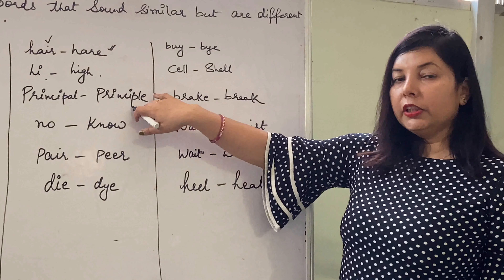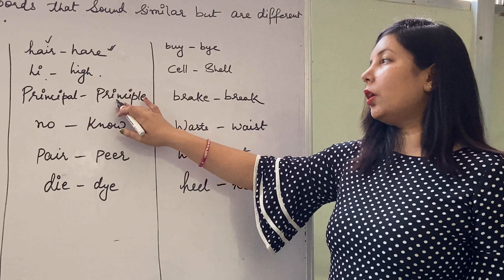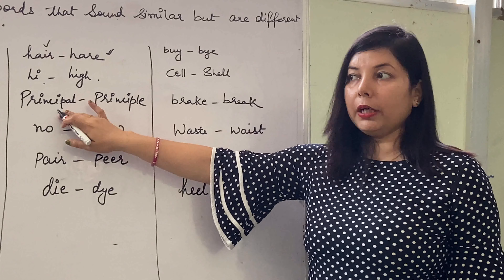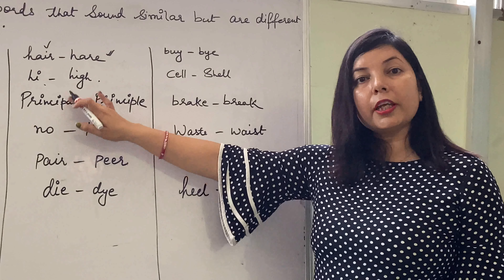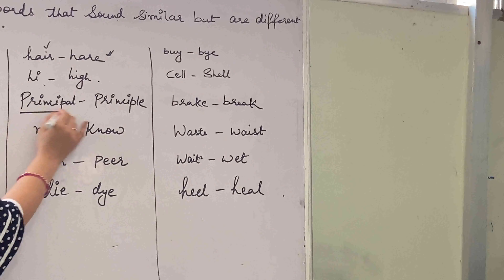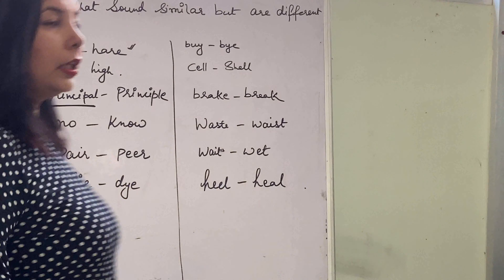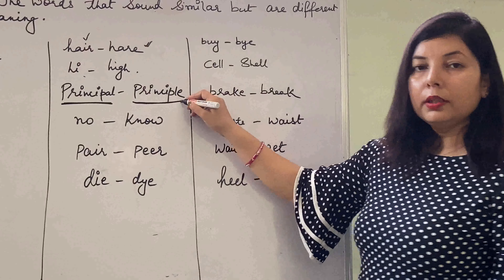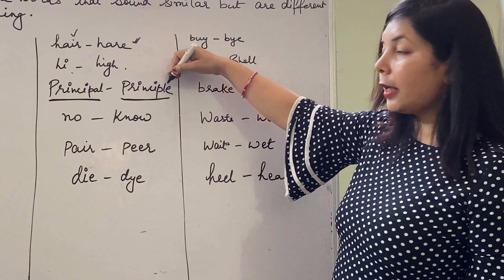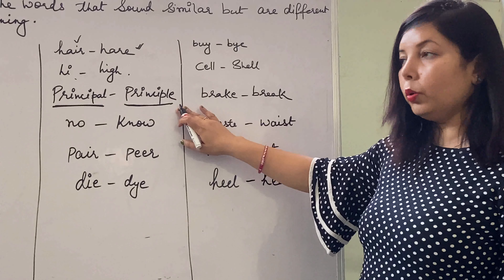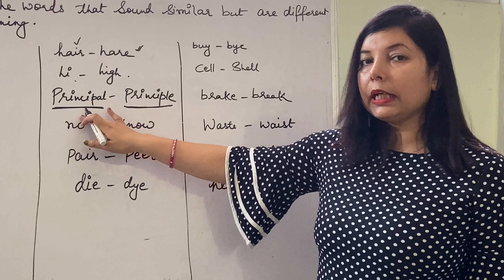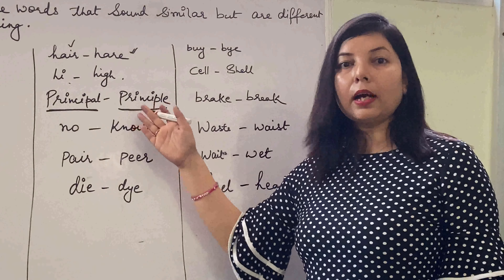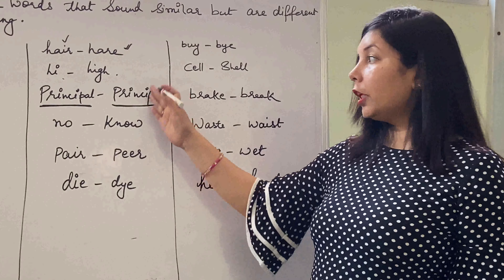Principal and principle. Generally people get confused a lot in this one. This 'principal' means Pradhan Adhyapak (head teacher). Inhein is school mein padh rahe hain, unke jo principal hain, unke liye aap ye spelling use karenge. And this 'principle' means sadhan, kisi ke usool. Ye jo principle hai P-R-I-N-C-I-P-L-E, iska matlab hota hai kisi ka usool. You can see how much big difference is there in the meaning, but there is no difference in the sound.